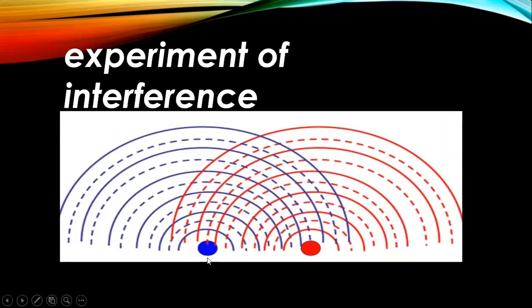For understanding, speaker one and speaker two are shown. The dark line represents the crest and the dotted line represents the trough. If we get crest and crest together, or trough and trough together — the same portions of waves meeting — then you will have constructive interference. If we get two opposite portions of waves together, then we will have destructive interference.